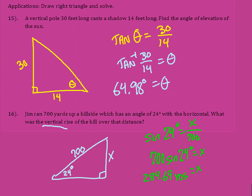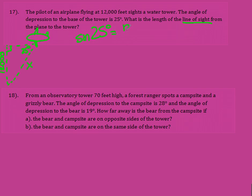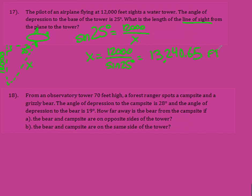For number 17, a pilot is 12,000 feet high and looks at a water tower. The angle of depression is 25 degrees. The 12,000 feet is the opposite side and x is the line of sight — the hypotenuse. Opposite over hypotenuse is sine. Sine of 25 degrees equals 12,000 over x. X is down low, so they switch: x equals 12,000 over sine of 25 degrees, giving 13,240.65 feet.